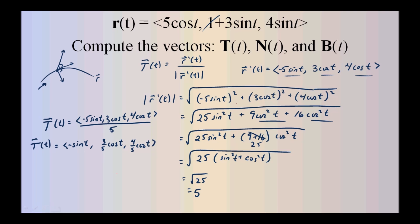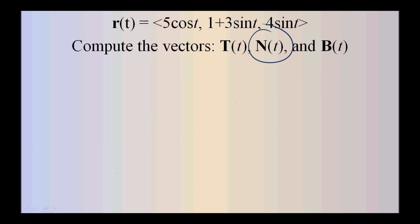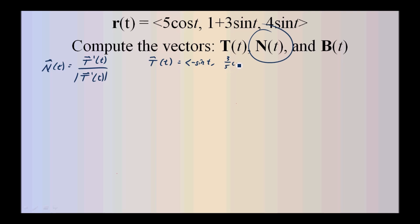That's our unit tangent vector. Now we compute N, the principal unit normal vector. N equals T'(t) divided by the magnitude of T'(t). From the previous slide, T = (−sin(t), 3/5 cos(t), 4/5 cos(t)). Taking the derivative gives T'(t) = (−cos(t), −3/5 sin(t), −4/5 sin(t)), which is the numerator of the unit normal.